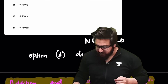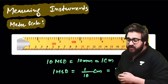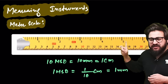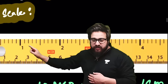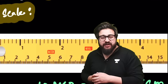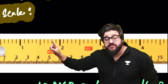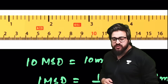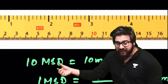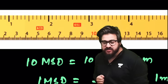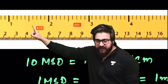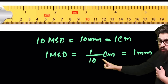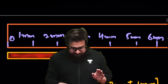The first measuring instrument is the meter scale. Zooming in between 1 and 2 cm shows one centimeter divided into 10 millimeter divisions — these are the main scale divisions (MSD). So 10 MSD = 10 mm = 1 cm, and 1 MSD = 1 mm. The least count of the meter scale is 1 mm, which is the minimum length measurable by this instrument.